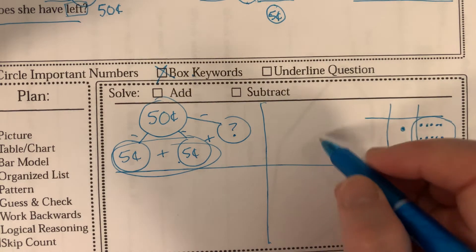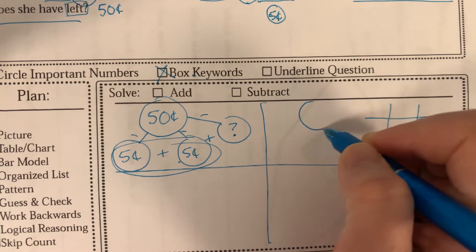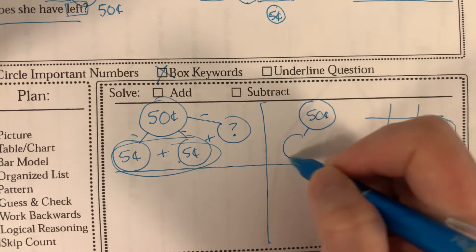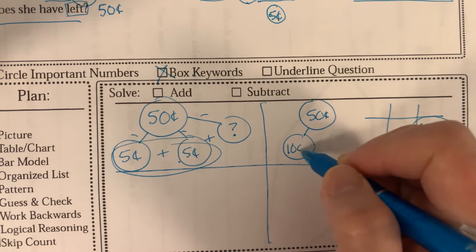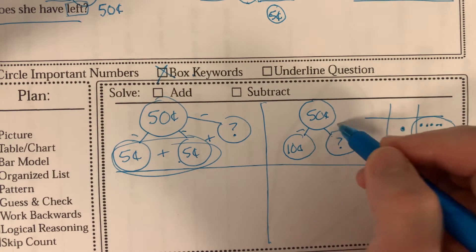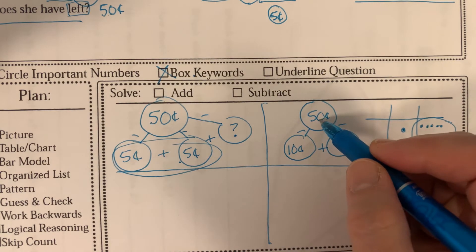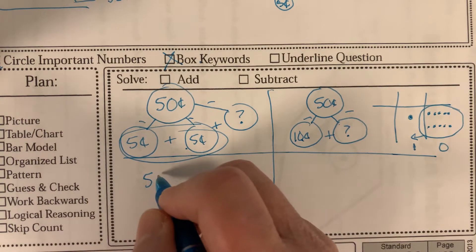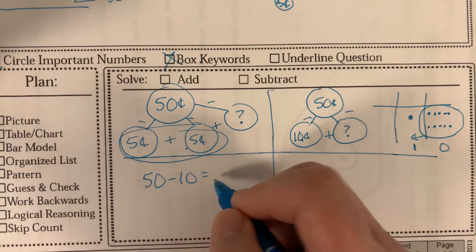So that's 10, so now we could build another number bond. She had 50 cents. She spent two nickels, which we learned was 10 cents. How much was left? So minus on the lines, plus in the middle, 50 cents minus 10 cents. So 50 minus 10 equals 40.